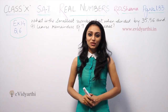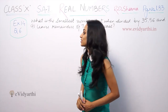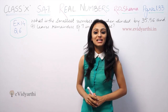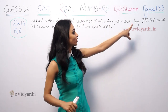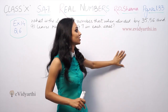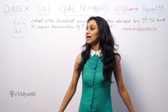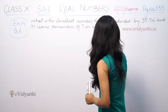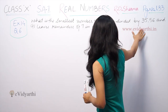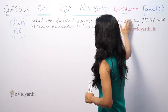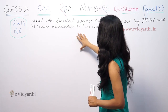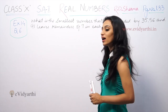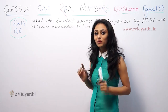Hi, this is Khushbu with another question of Real Numbers. This is question number 6 of exercise 1.4, page number 1.33 of R.D. Sharma. The question says: what is the smallest number that when you divide by 35, 56, and 91, leaves a remainder of 7 in each case?